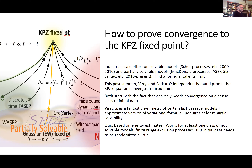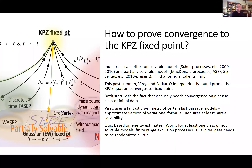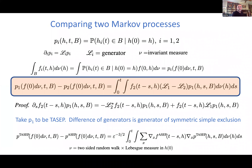One thing I can advertise is that our method works at least for one class of non-solvable models: finite range exclusion processes. In finite range exclusions, it's just like TASEP except the particles are allowed to make jumps not just of size one but maybe size five. They're still not allowed to jump if there's somebody in the way, but they're allowed to make more than nearest-neighbor jumps. In the height functions, that means the function moves up and down in little blocks. There is a restriction that we can't do it for any initial data for the finite range exclusions.